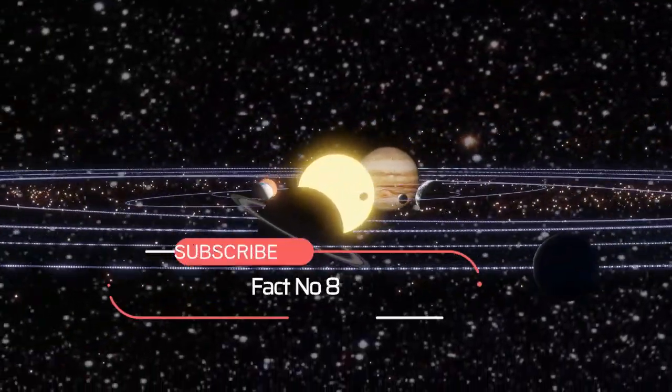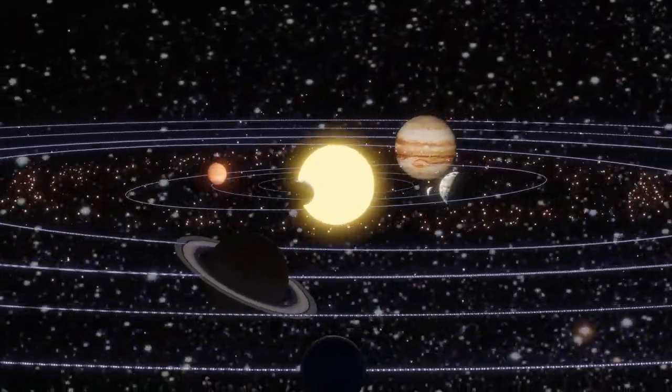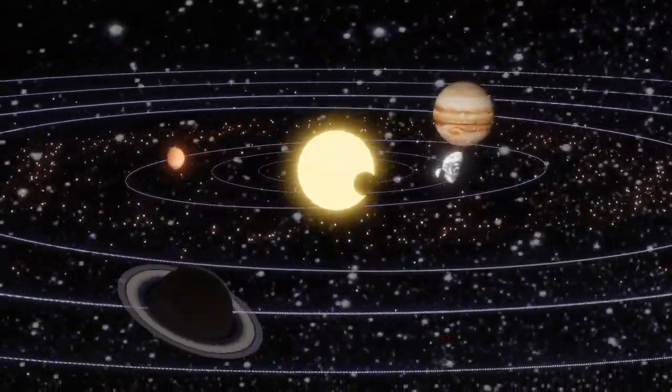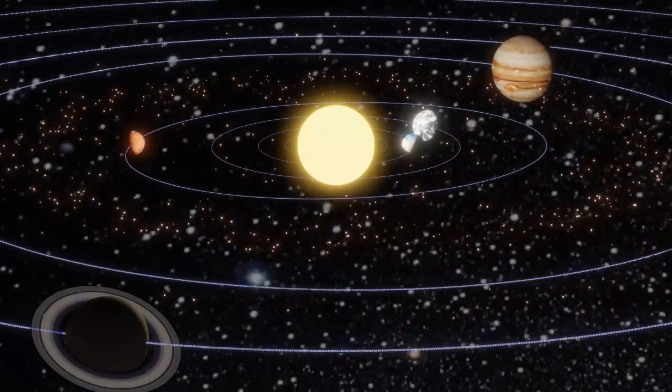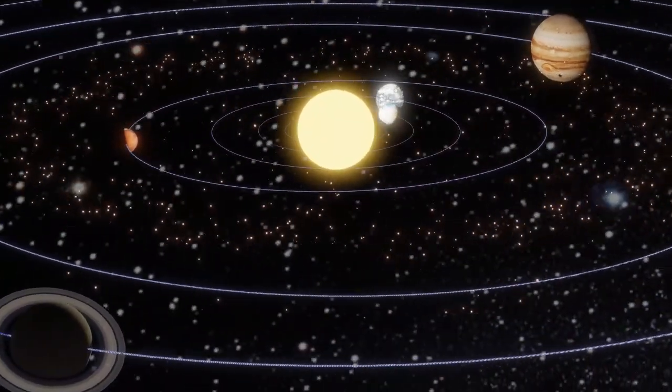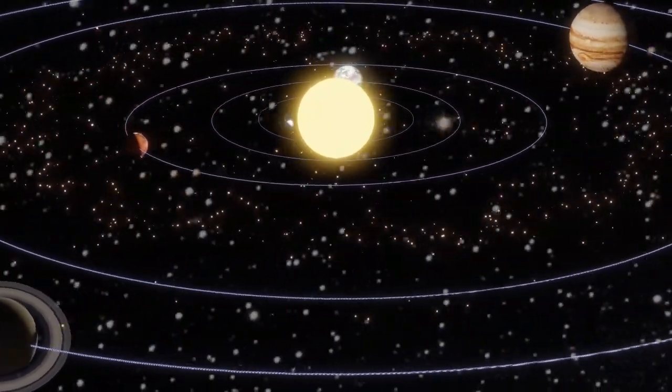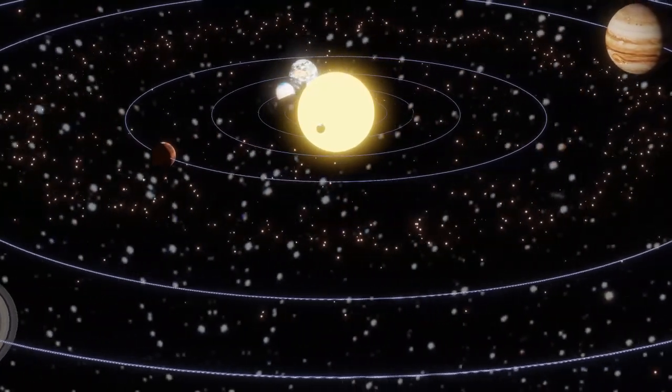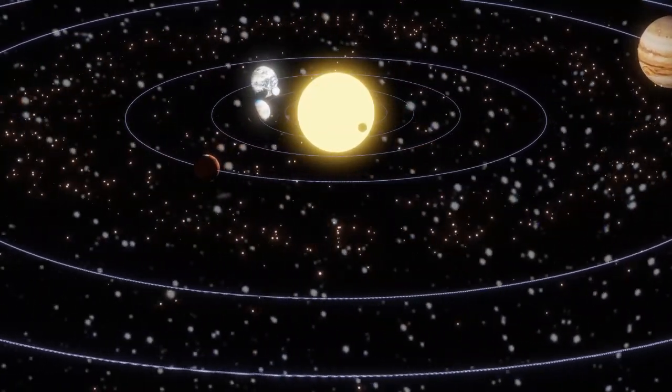Fact number eight, the longest day in the solar system is on Venus. A day on Venus is longer than a year on Venus. It takes 243 Earth days for Venus to complete one rotation on its axis, and only 225 Earth days to complete one orbit around the Sun.